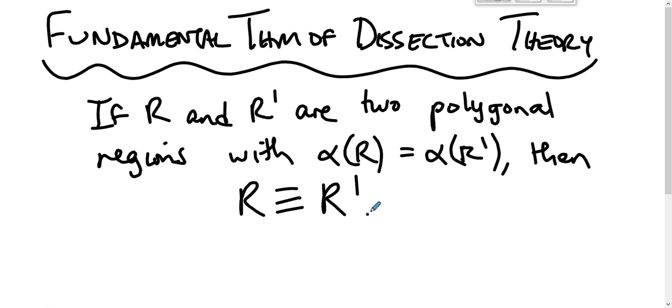In other words, you give me two polygons of equal area, I can cut the one up and rearrange it and make the other. That's what the fundamental theorem of dissection theory says.